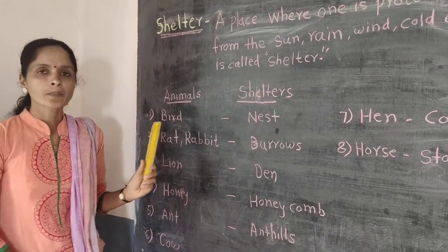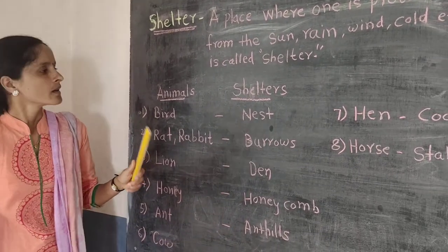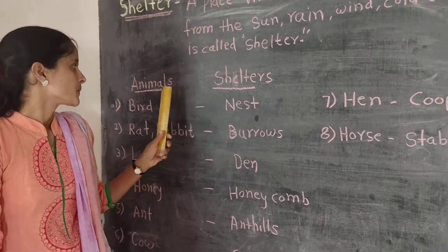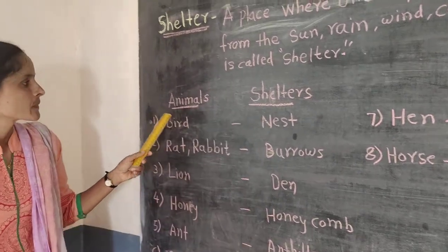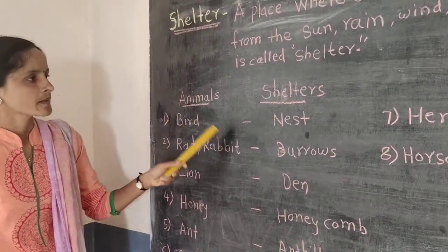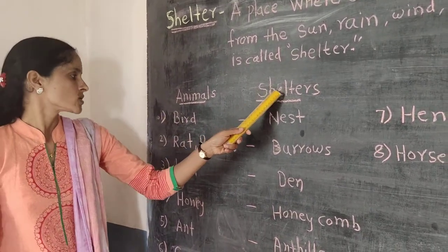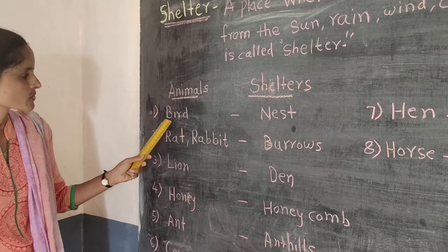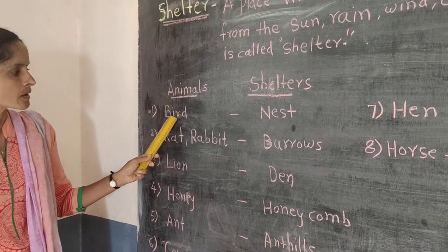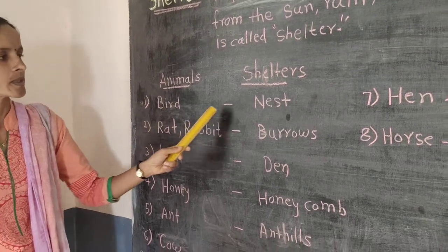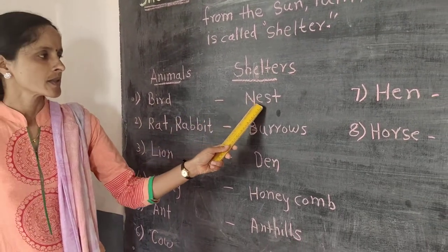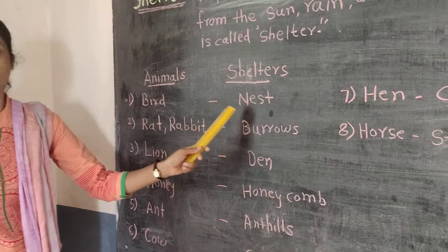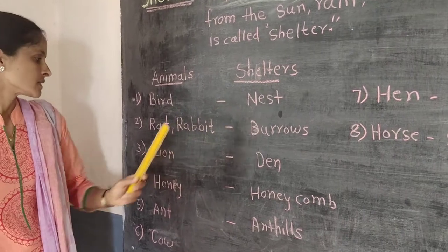Now you can see the animals and their shelters. First, bird. Bird's shelter — nest. In Marathi, pakshi, kudratat ghar dat.